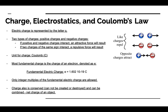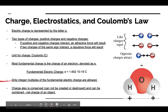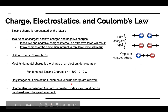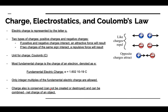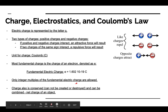Only integer multiples of the fundamental electric charge are allowed, and charge is conserved — both rules result from the fact that everything in the universe is made up of protons, neutrons, and electrons that cannot change or be destroyed. We must have an integer multiple of protons, electrons, and neutrons, and their charges can never be destroyed.